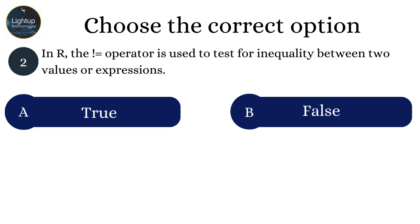In R, the not equal to operator is used to test for inequality between two values or expressions.